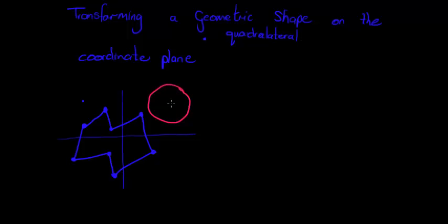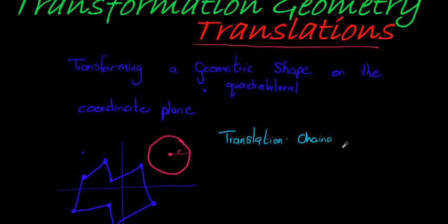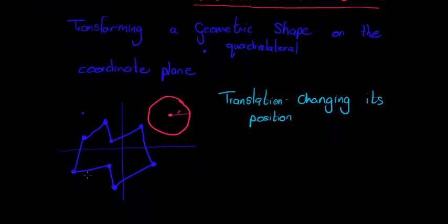What do we mean by translations of these geometric shapes? Well a translation is simply changing its position. All we do is we just move the shape elsewhere on the coordinate plane.